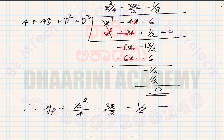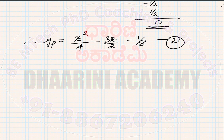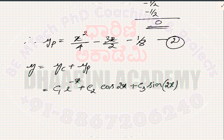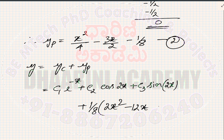Alternatively, taking 1/8 common from yp: yp = (1/8)(2x² − 12x − 1). So the final answer is y = c₁e^(−x) + c₂cos(2x) + c₃sin(2x) + (1/8)(2x² − 12x − 1).